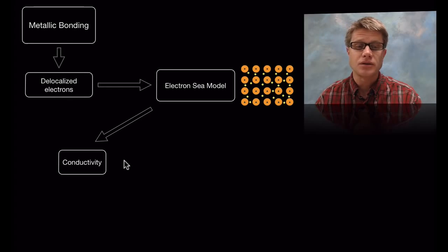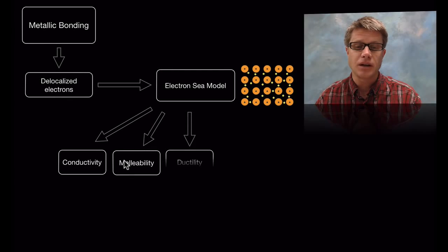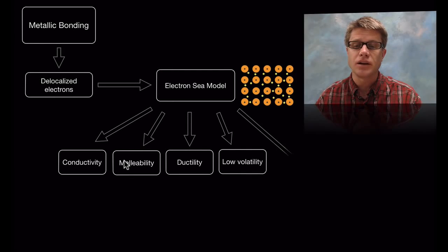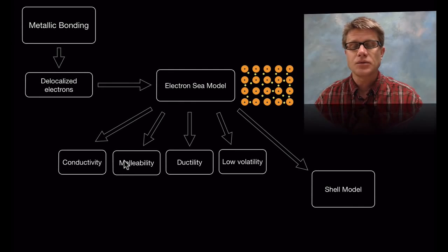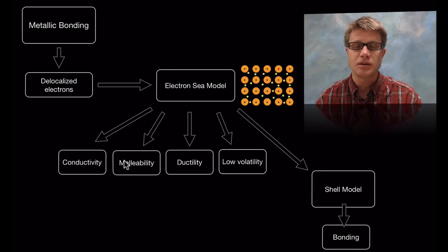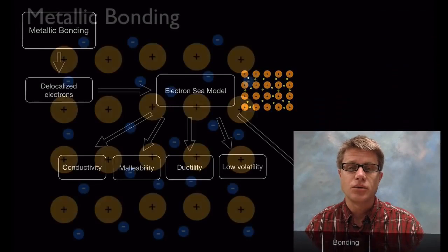It accounts for a lot of the properties of metals like their conductivity, malleability, ductility, and low volatility. And sometimes we have to go to the shell model however to explain new phenomenon. And we'll get to that when we're looking at melting point. And all of that has to do with bonding.